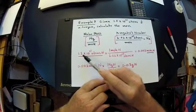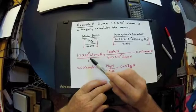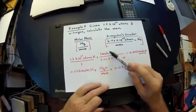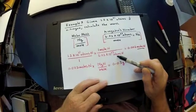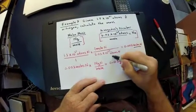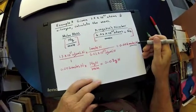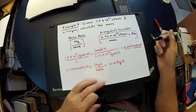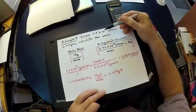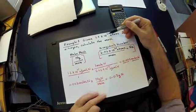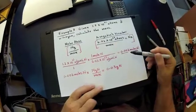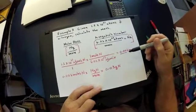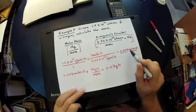We multiply 1.2 times 10 to the 21st atoms of nitrogen over one, times one mole of nitrogen over 6.02 times 10 to the 23rd atoms of nitrogen. The atoms of nitrogen cancel, and we solve for moles — getting 0.002 moles of nitrogen. Does this make sense? Yes, because the number of atoms given, 10 to the 21st, is significantly smaller than Avogadro's number, 10 to the 23rd, so we expect a small number of moles.